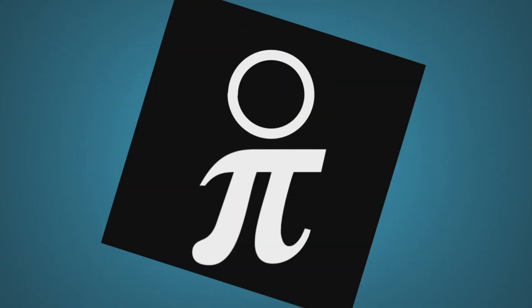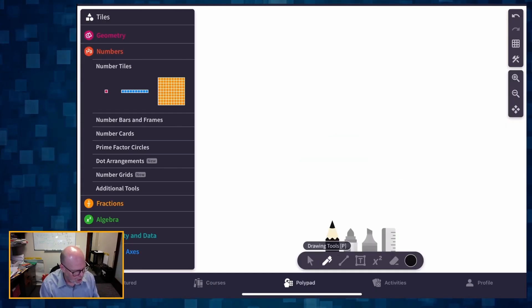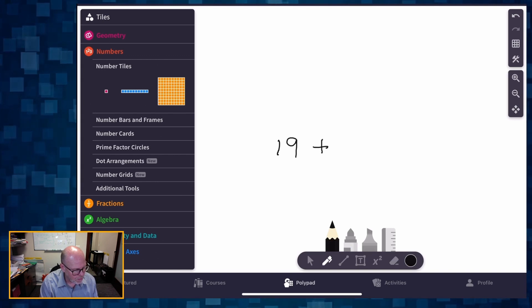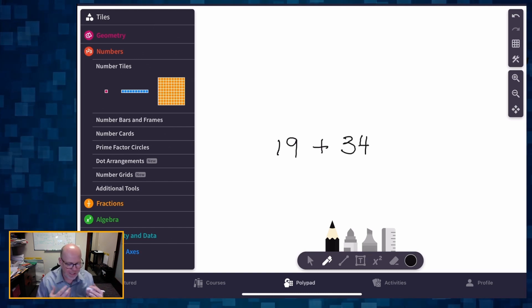So let's do one more quick example. What are we going to do? Let's do 19 plus 34. Alright. So we're going to build 19 plus 34.